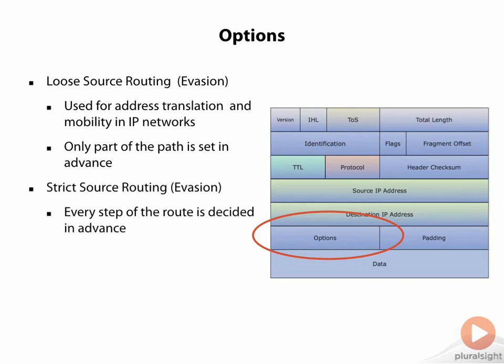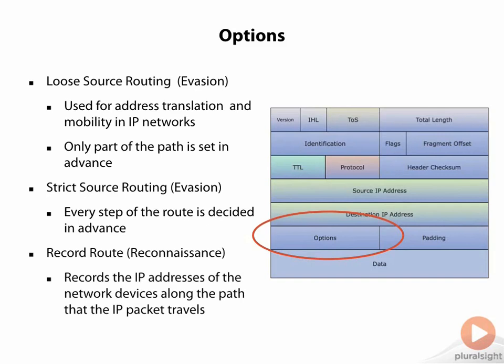There are other types of options. There is strict source routing, which is also used for evasion. In this case, every single step of the route is decided in advance, and you have a full route list listed in the options field.